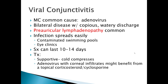Viral conjunctivitis is most commonly caused by adenovirus. It's a bilateral disease. The disease typically shows up in one eye first and then within a couple of days moves to the second eye, and there will be copious watery discharge. Viral conjunctivitis has the physical exam finding of preauricular lymphadenopathy, which is different from all the other types of conjunctivitis.